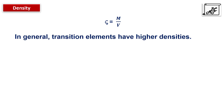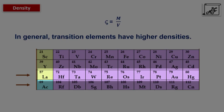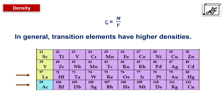The density formula is mass upon volume, and in general transition elements have higher densities. When we see the transition series — particularly 3D, 4D, and 5D — in case of the 5D transition series, that is the elements after the lanthanoid series, due to lanthanoid contraction, these elements have almost the same size as those of the 4D transition series.